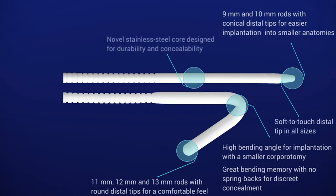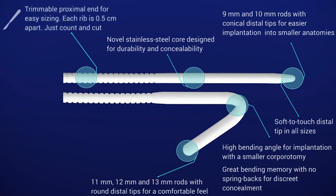Novel stainless steel core designed for durability and concealability. The trimable proximal end for easy sizing. Each rib is 0.5 centimeters apart. Just count and cut.